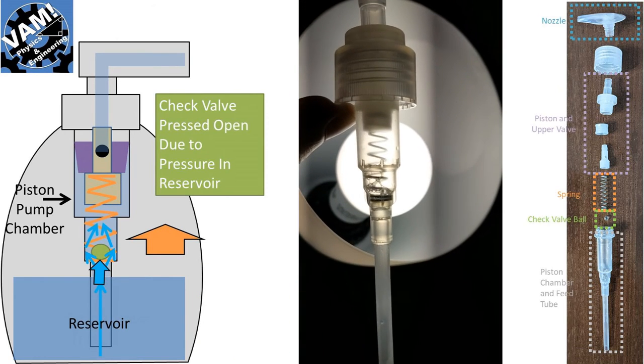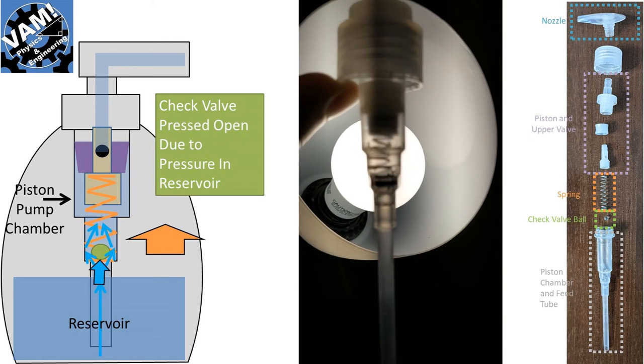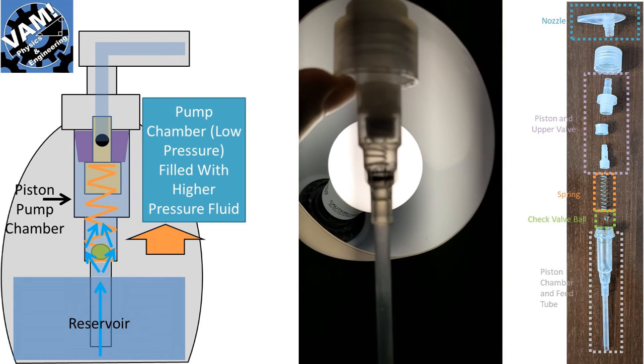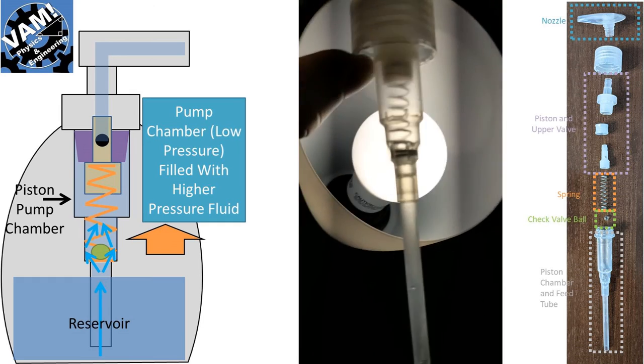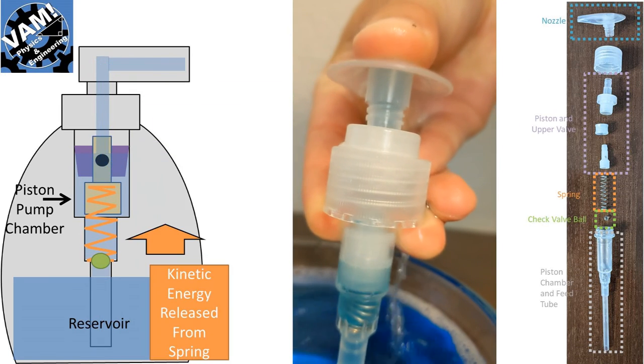The piston fluid chamber is now in a state of low pressure which causes the higher pressure of the soap or fluid in the reservoir to push its way past the ball check valve and fill the piston chamber. Then the process repeats.